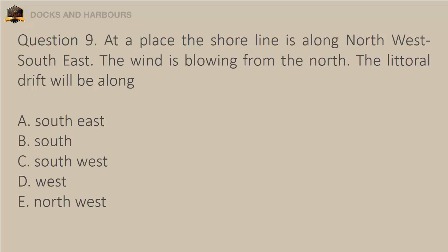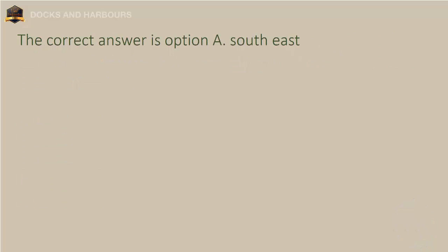Question 9. At a place the shoreline is along northwest-southeast. The wind is blowing from the north. The littoral drift will be along: a. Southeast, b. South, c. Southwest, d. West, e. Northwest. The correct answer is option E: Northwest.